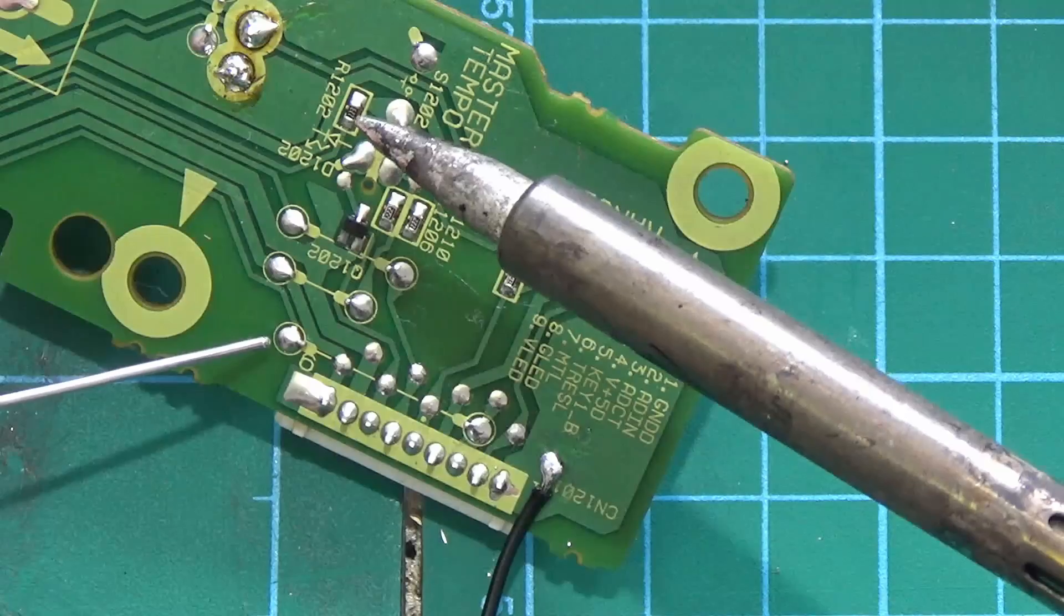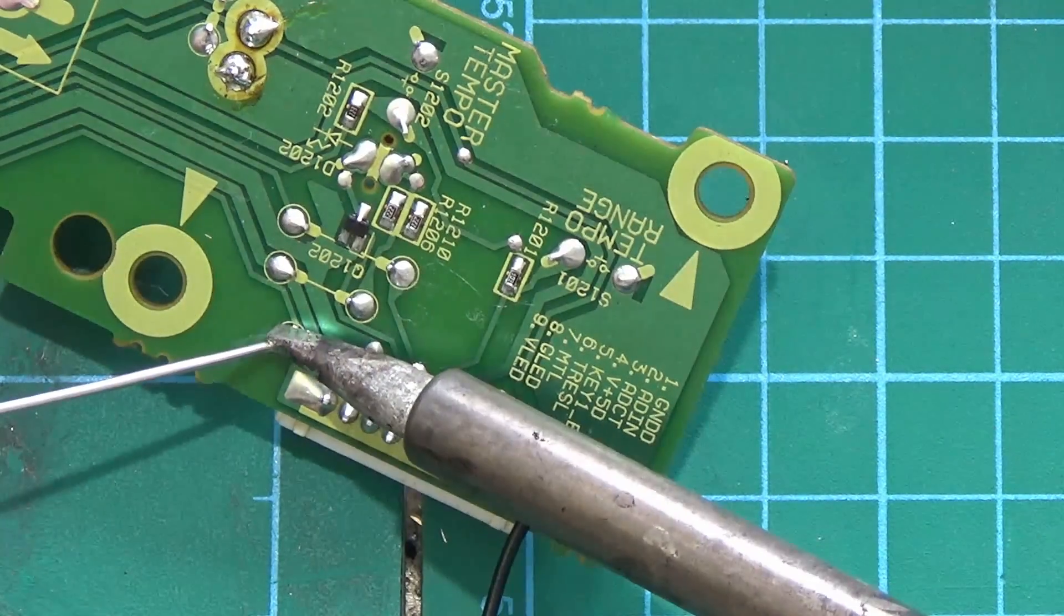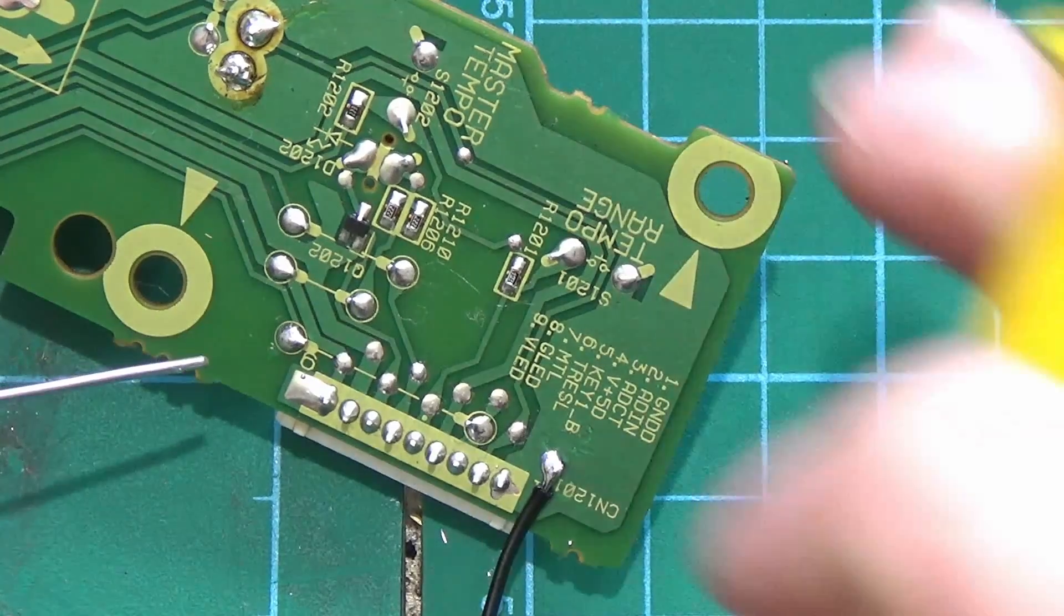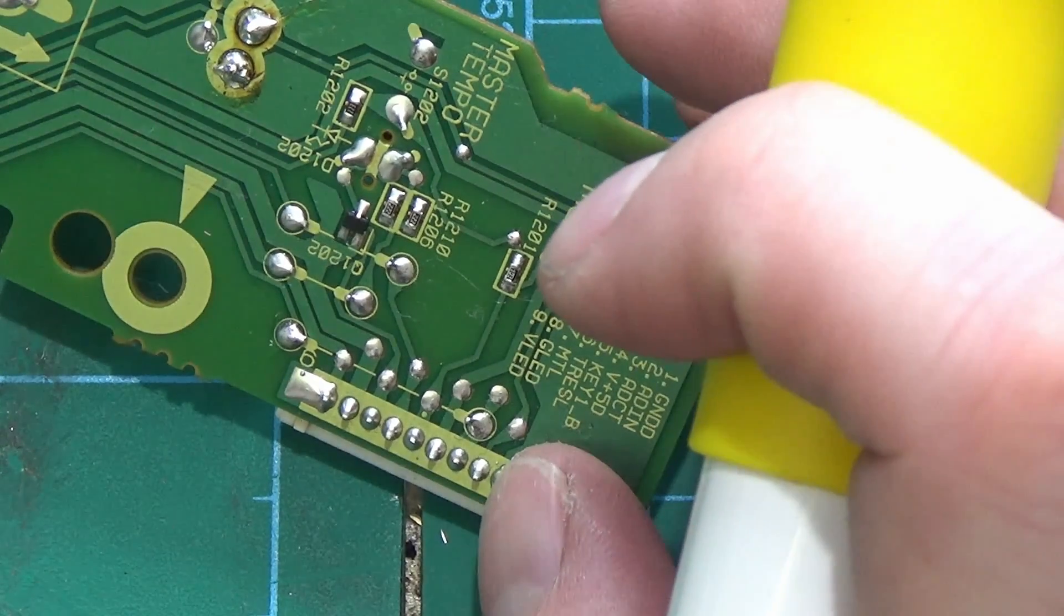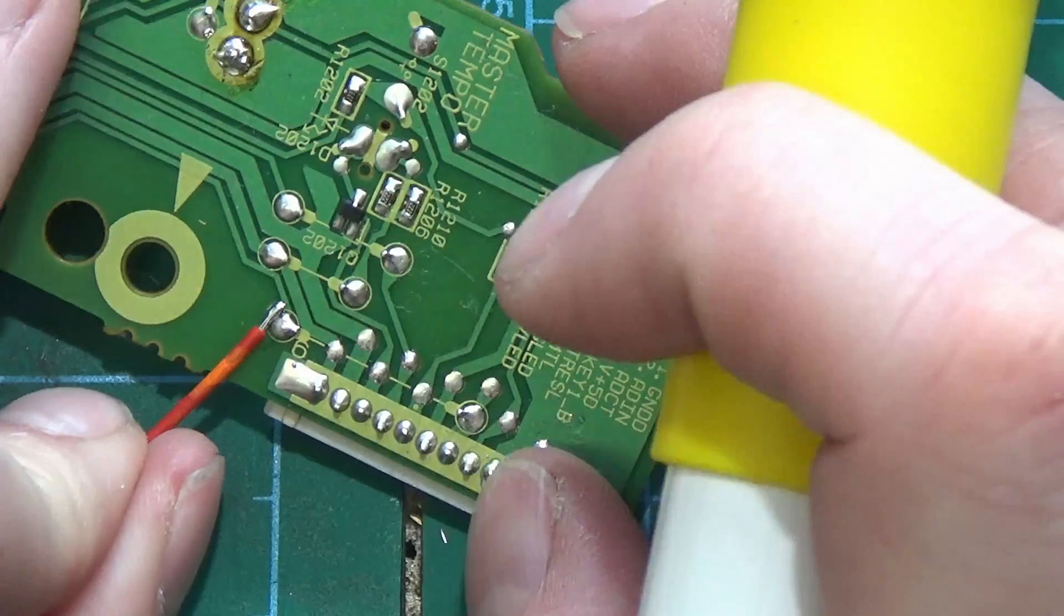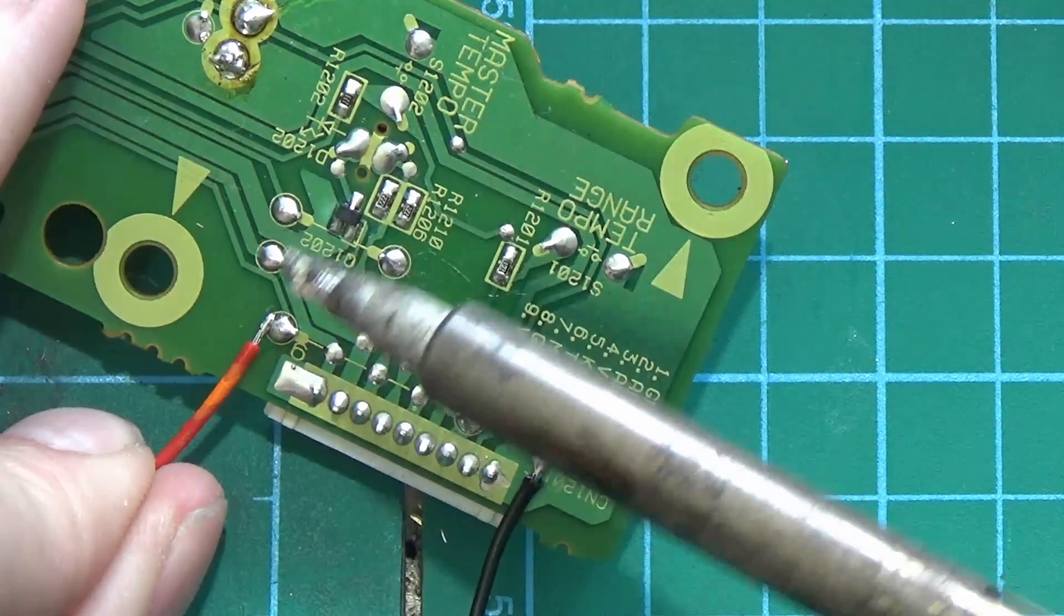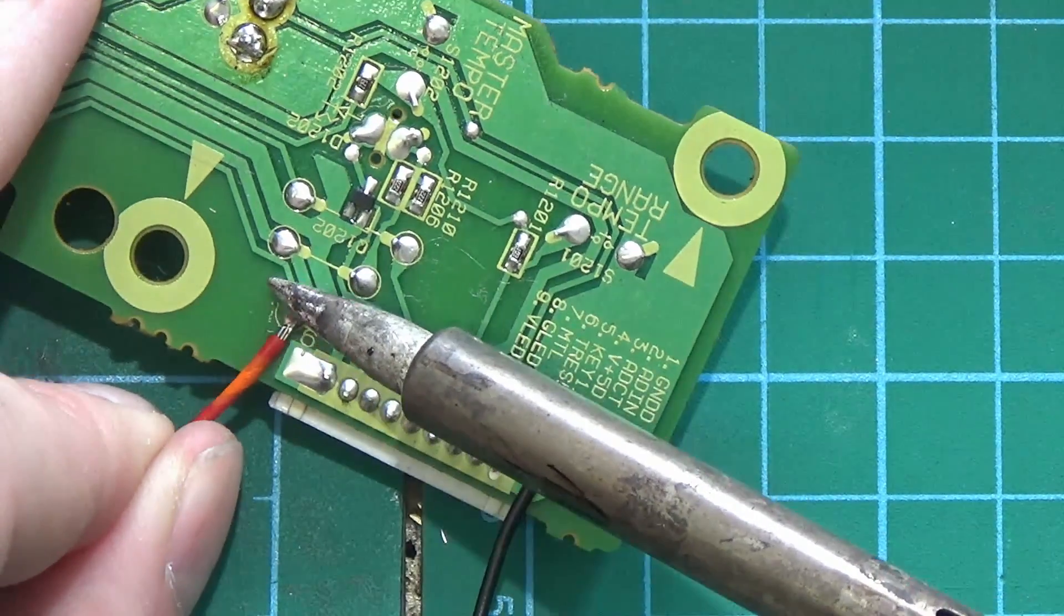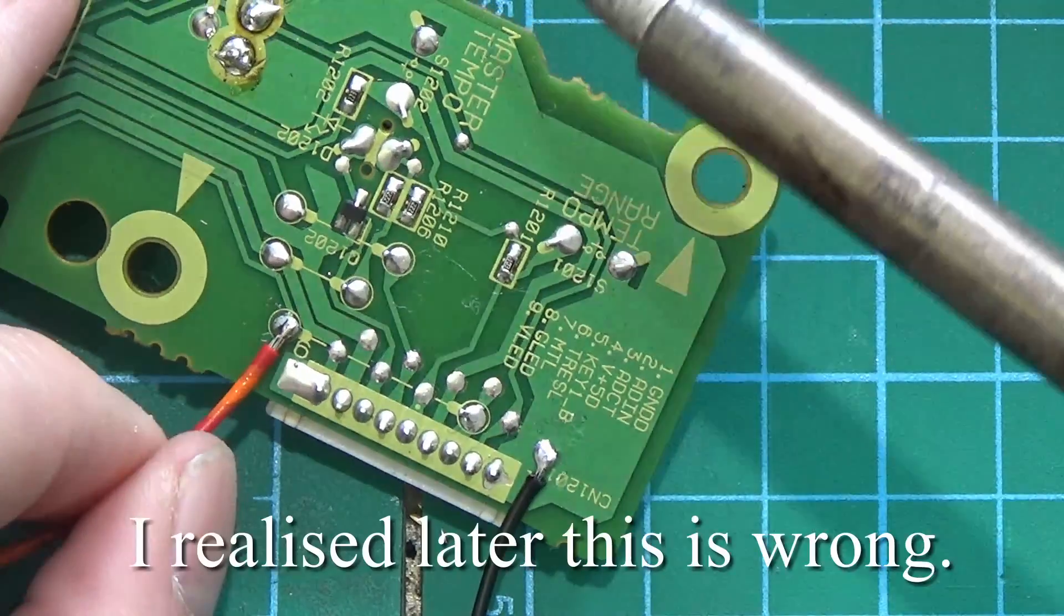But what it did do was take out one of the fuses on the CDJ, so I had to repair the fuse before I could go any further. I wasn't sure if it had done any more damage, but thankfully it hadn't. So again, the point that I'm soldering now is wrong and it needs to be on that large pad just below it.